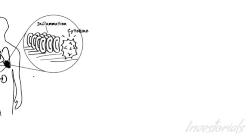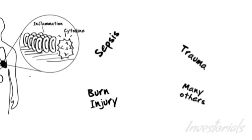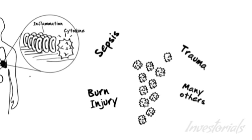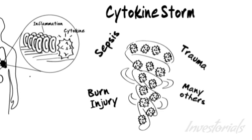However, in life-threatening illnesses that are treated in the intensive care unit like sepsis, trauma, severe burn injury, and many others, the body's immune system often goes haywire, producing massive quantities of cytokines that make even more cytokines in a vicious cycle called cytokine storm.